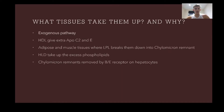Looking at the exogenous pathway: HDLs — high density lipoproteins circulating in the blood, generated in the liver — first give APOC2 and E to the chylomicrons. At adipose and muscle tissue, lipoprotein lipase (LPL) breaks down the chylomicrons carrying triacylglycerols into chylomicron remnants. HDLs then take up excess phospholipids and cholesterol, and the chylomicron remnants are removed by B/E receptors on hepatocytes, with cholesterol being carried back to the liver.